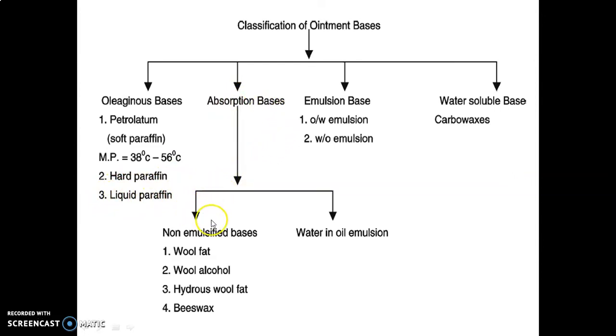Absorption bases are classified into non-emulsified bases and water-in-oil emulsion (W/O emulsion), in which water is the internal phase while oil acts as the external phase. Non-emulsified bases include wool fat, wool alcohol, hydrous wool fat, and beeswax. Emulsion bases are of two types: O/W (oil in water) where oil is the internal phase and water is the external phase, and W/O emulsion where water is internal and oil is external. Water-soluble bases include carbowaxes.